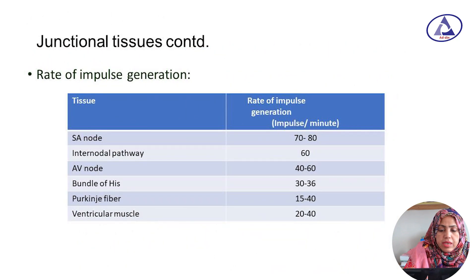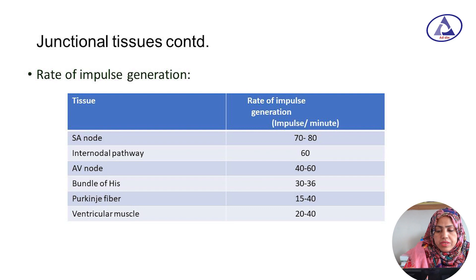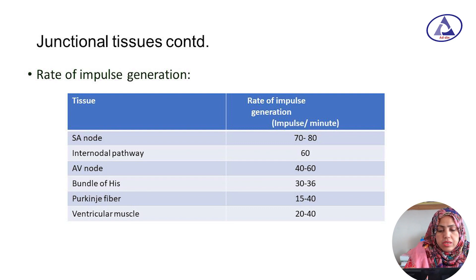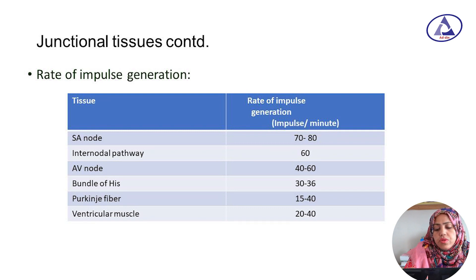Regarding rate of impulse generation: in the SA node, the rate is 70 to 80 impulses per minute; internodal pathway is 60 impulses per minute; AV node is 40 to 60; and Purkinje fibers are 15 to 40 impulses per minute.